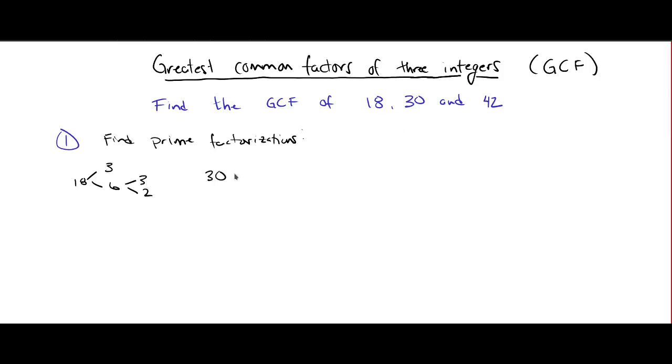Now let's take a prime factorization of 30. So 30 is 2 times 15, and 15 is 3 times 5. 2, 3, and 5 are all prime, so that's the prime factorization of 30.